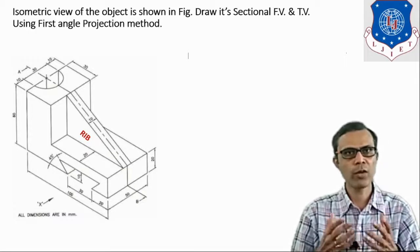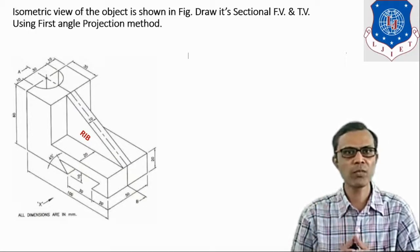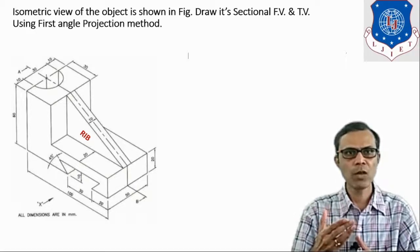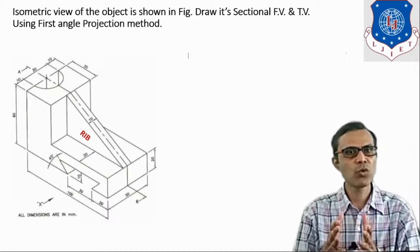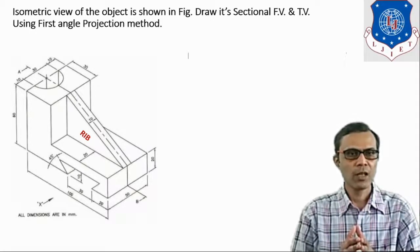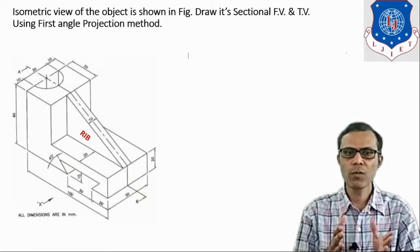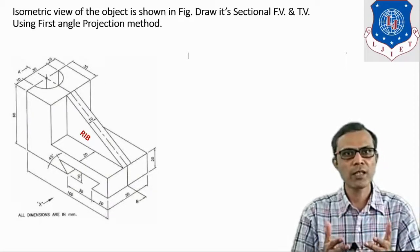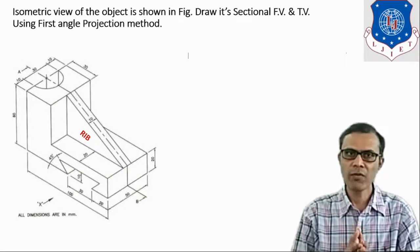According to the first angle projection method, we know the arrangement of the views. The top view should be located below the front view, and according to that arrangement, we have to manage the space. Initially we will draw the normal front view and top view, and after drawing that, we will consider the sectional view.